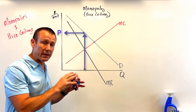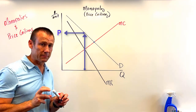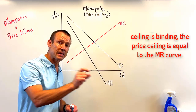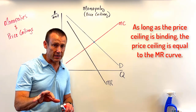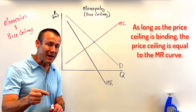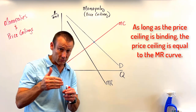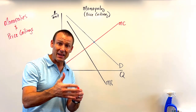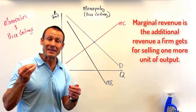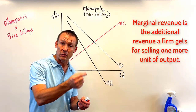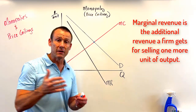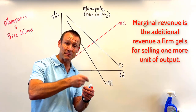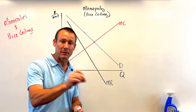Now we're going to have the government come in and regulate the price with a price ceiling. As long as that price ceiling is binding, the price ceiling becomes the MR curve. That shouldn't be too hard to understand — as long as the price ceiling is binding, if I want to sell one more good, I'm going to charge the price ceiling price for every good I sell. That is the marginal revenue: the additional revenue the firm gets from selling one more product.